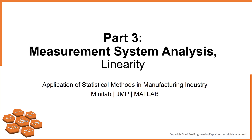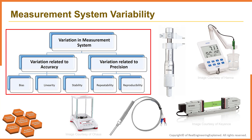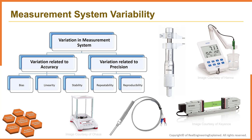Let's dive into the linearity in the measurement systems. Determining the capability of a measurement system is an important aspect of many quality and process improvement activities. In any activity involving measurements, some of the observed variability will be inherent in the items being measured, and some will result from the measurement system itself — one variation coming from the part and the other from the measurement system.